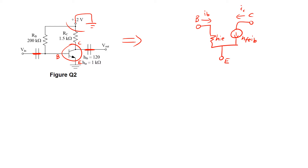We will proceed to the emitter first. At the emitter side in figure Q2, it's actually tied to the ground. So we will draw the connections of the H-parameter model with the emitter side directly to ground.